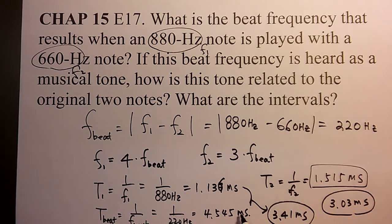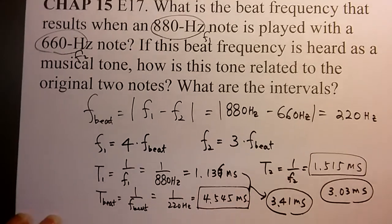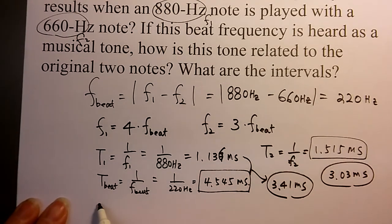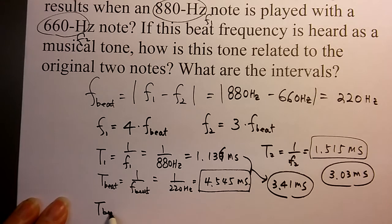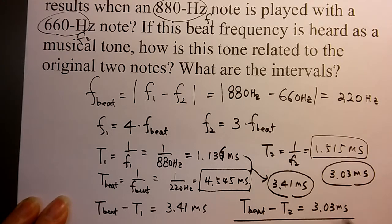So you got this between these two, T beat minus T1 becoming 3.41 milliseconds, and then T beat minus T2 becoming 3.43 milliseconds.